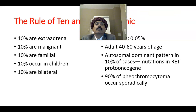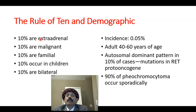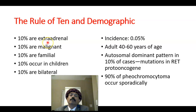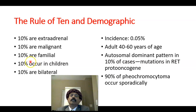For memory, we have the rule of 10. In 10% of cases it is extra-adrenal — it may be in the sympathetic ganglion or even in the carotid body. In 10% of cases they are malignant; around 90% of cases are benign. In 10% of cases they are familial, which may follow an autosomal dominant pattern.